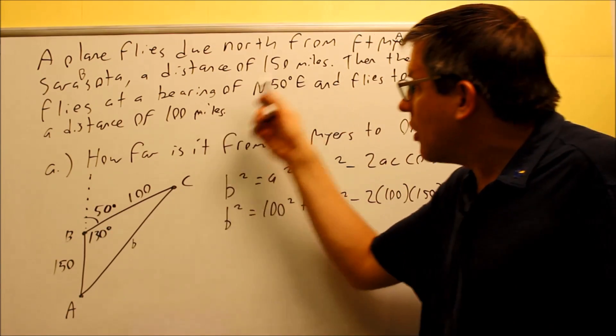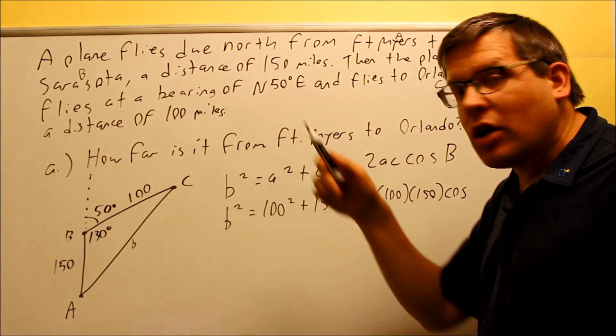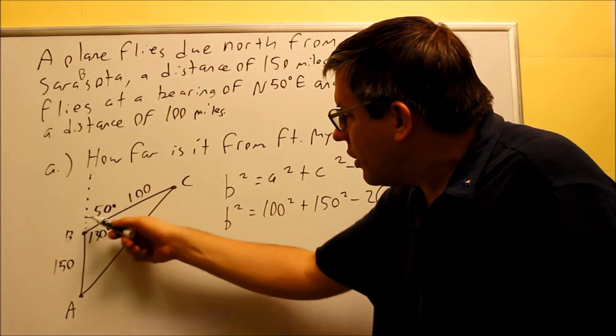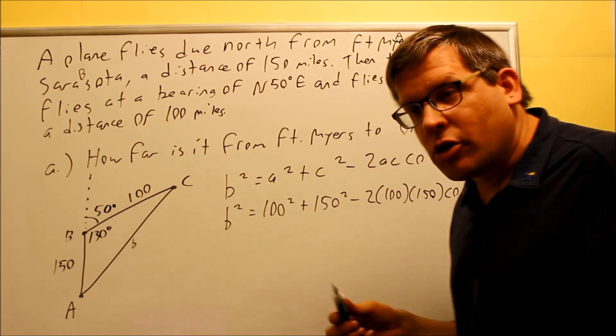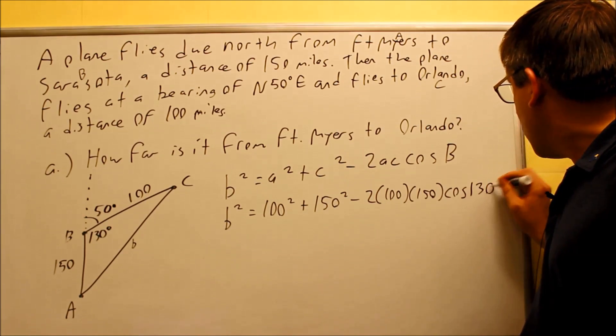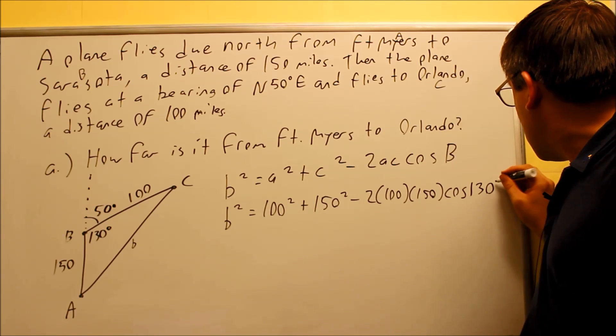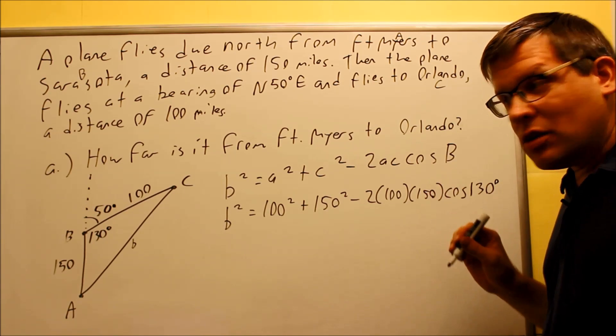Remember you always want to use the angle inside the triangle. We had it on the outside because originally that was a bearing that they gave. We did the subtraction from 180, we got the 130. So this is the correct angle that you want to put in here, 130 degrees. We're using that one, not 50.